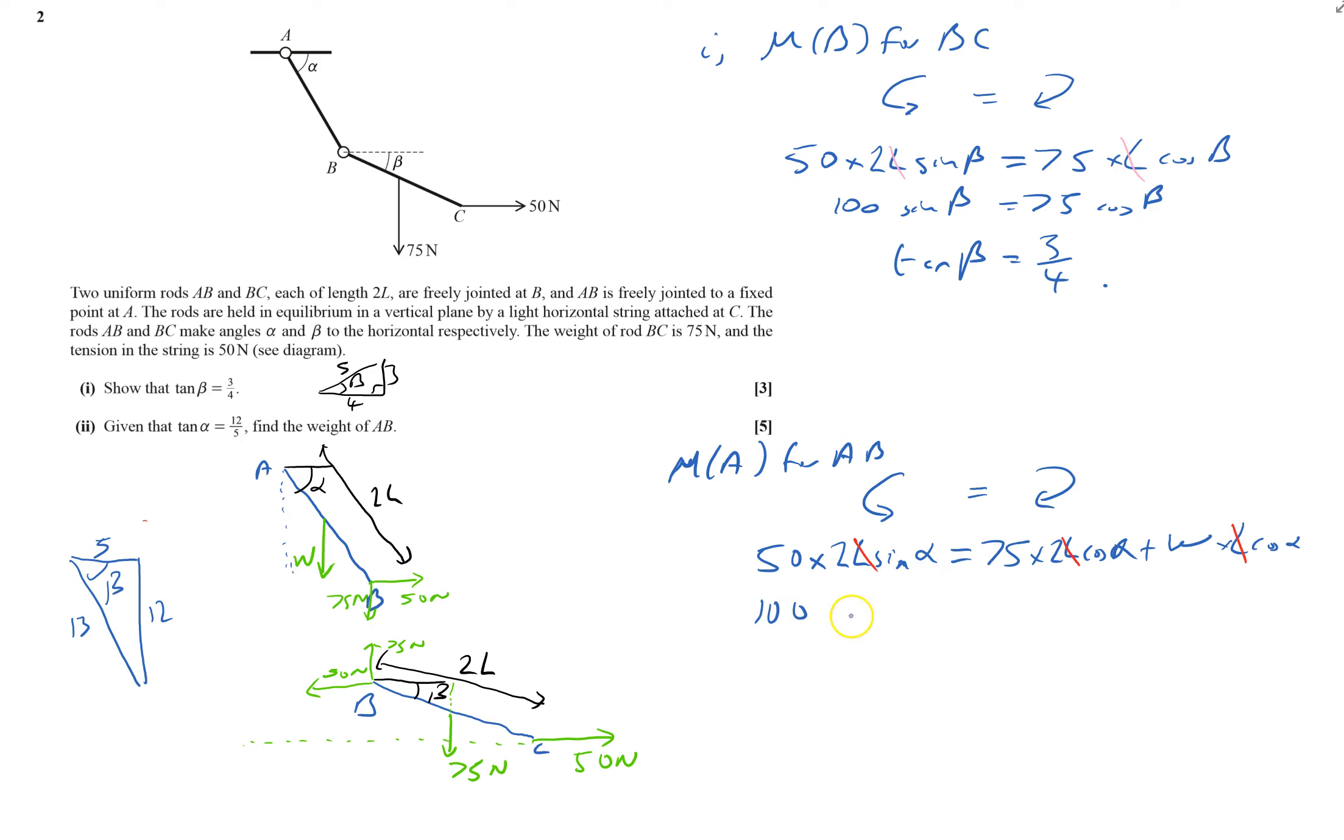So it will be 100 times by sine alpha is, well that shouldn't be a beta there, that should be an alpha. Sine alpha is, so opposite over hypotenuse 12 thirteenths. So 100 times by 12 thirteenths equals 150 times by cos alpha. So that's 5 thirteenths plus W times by 5 thirteenths.